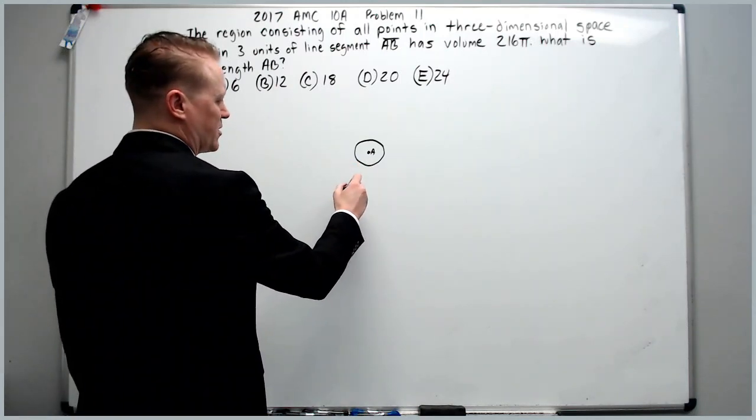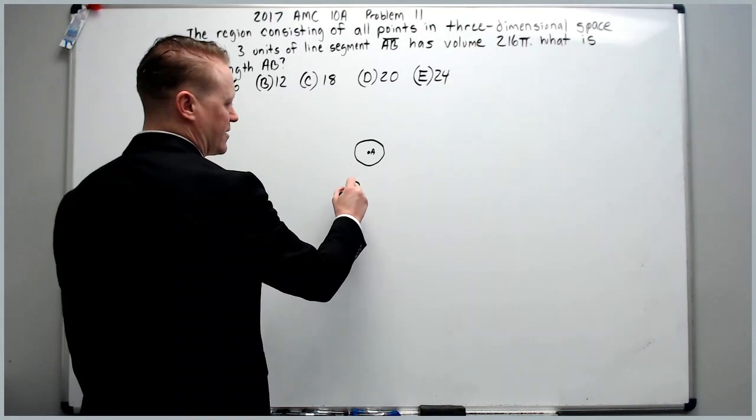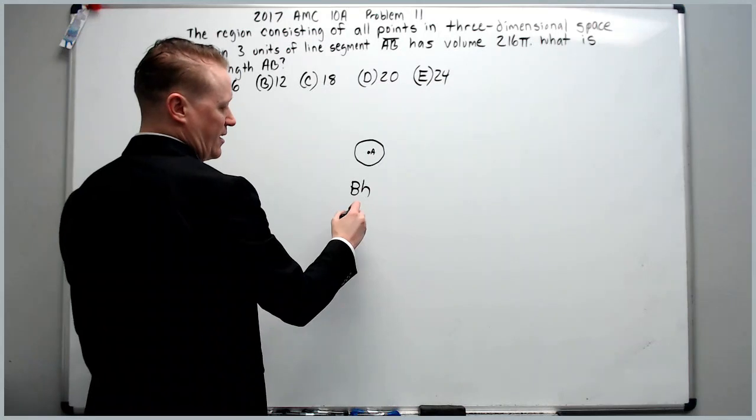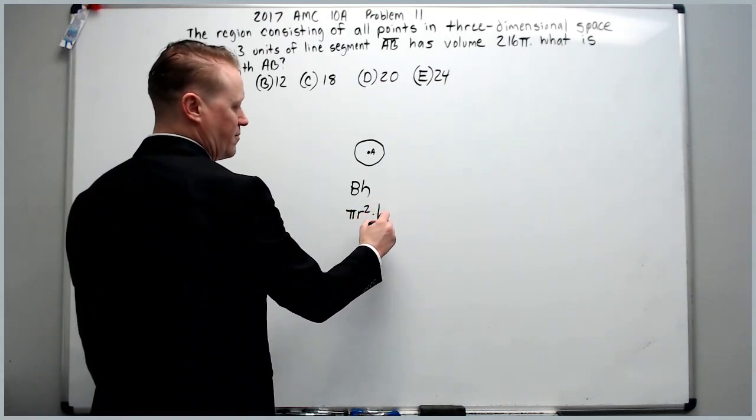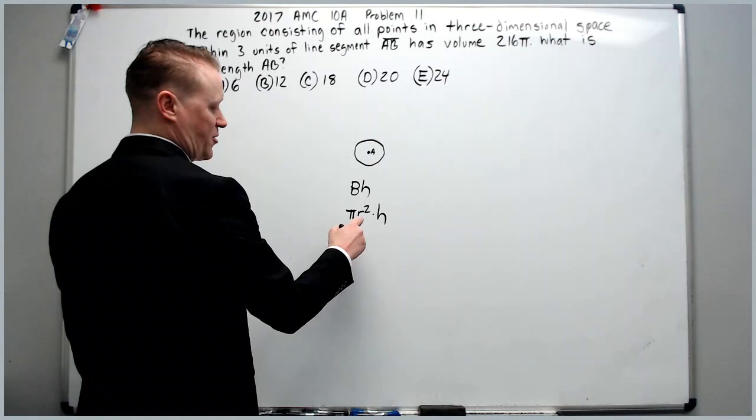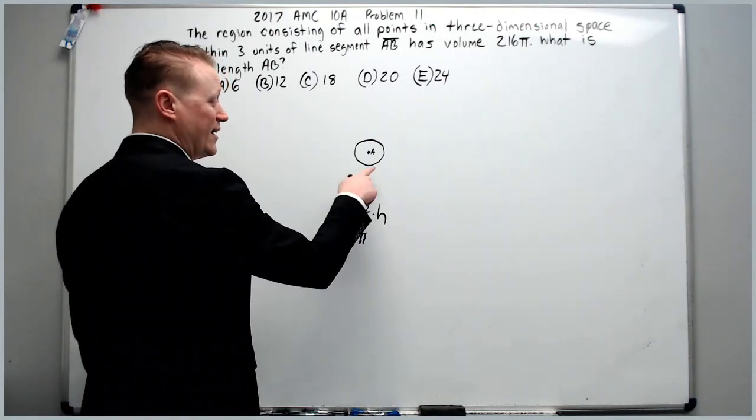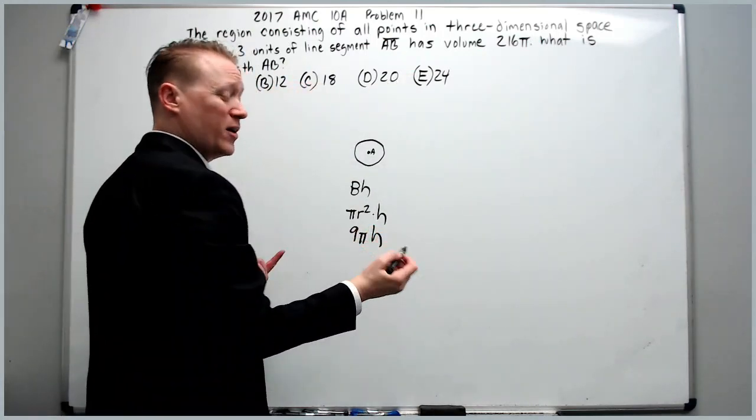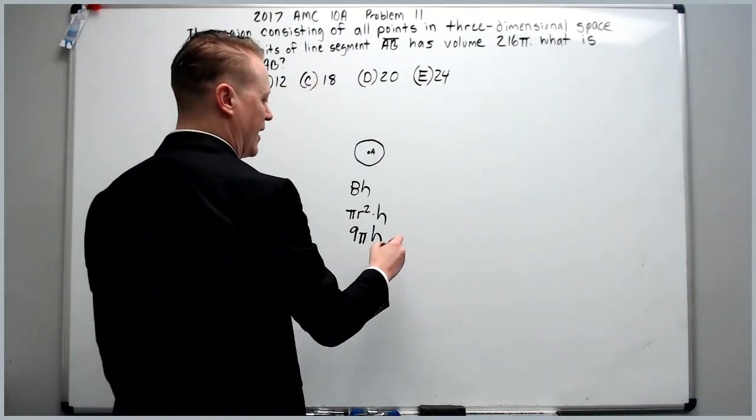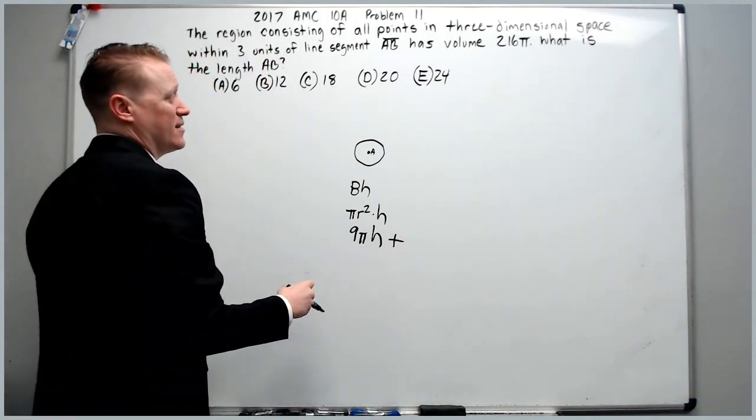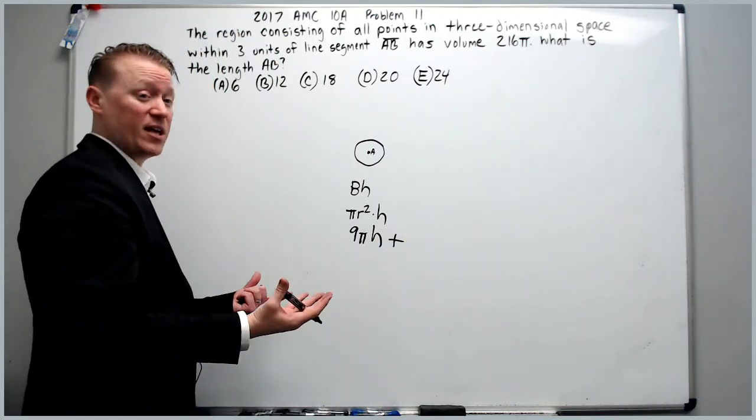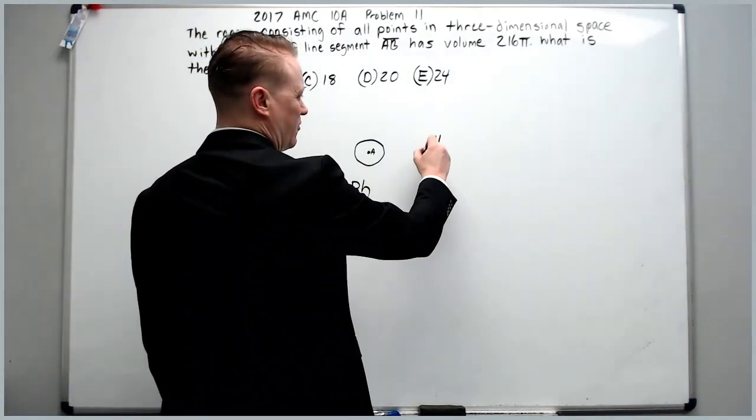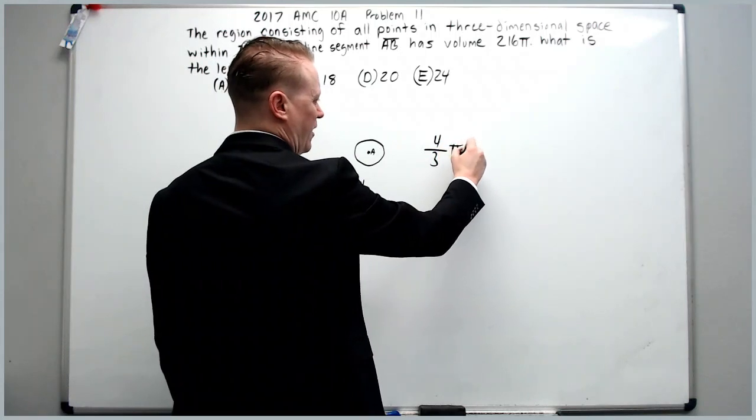So we need to calculate the cylinder plus the end caps. The cylinder is area of the base times the height. The base is a circle with radius 3, so it's πr² times h. Plug in 3 to get 9πh. The height is the length of AB, and that's what we're looking for.